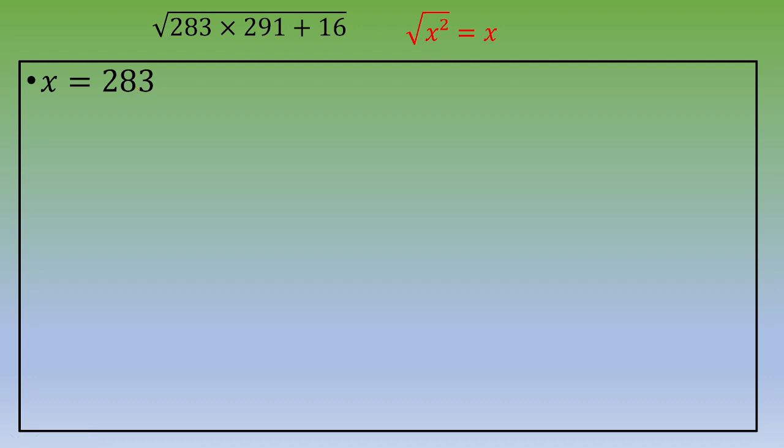Next step is to express the other number, 291, as 283 plus 8, and this is x plus 8.